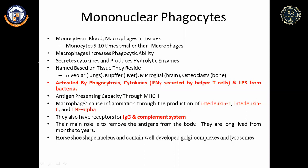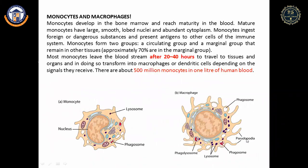Macrophages' main role is to remove antigens from the body; they are long-lived for months to years. They have a horseshoe-shaped nucleus and well-developed Golgi complexes and lysosomes. Many monocytes leave the bloodstream after 20 to 40 hours to travel to tissues and convert into macrophages. There are about 500 million monocytes in one liter of human blood.